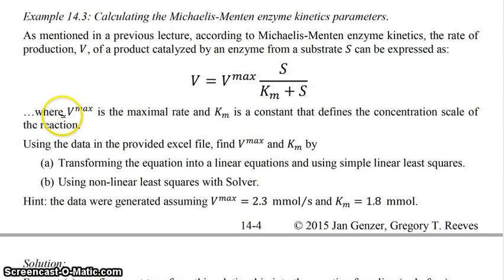In this case you have the parameters Vmax which appears here and Km which appears here. What we want to do is use the data in the provided Excel file to find Vmax and Km by the two different methods. By the way, the data from the Excel file were generated assuming that these were the values of Vmax and Km.